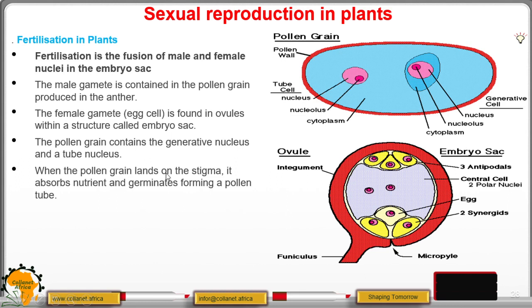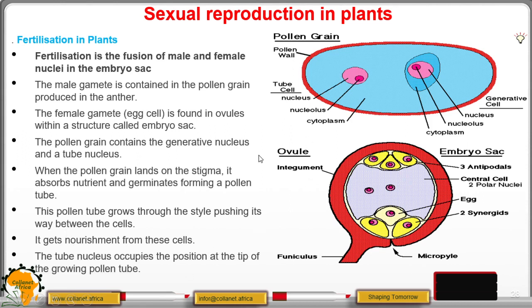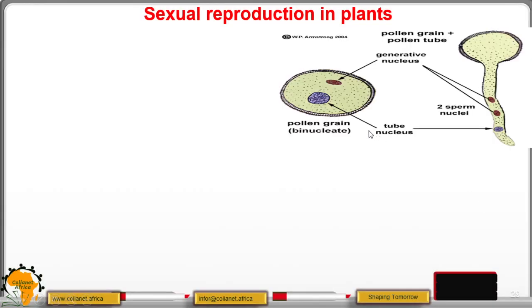When the pollen grain lands on the stigma, it absorbs nutrients and germinates, forming a pollen tube. This pollen tube grows through the style, pushing its way between the cells, and gets nourishment from the cells in the style. The tube nucleus occupies the position at the tip of the growing pollen tube. This is a pollen grain that has germinated and developed a pollen tube.